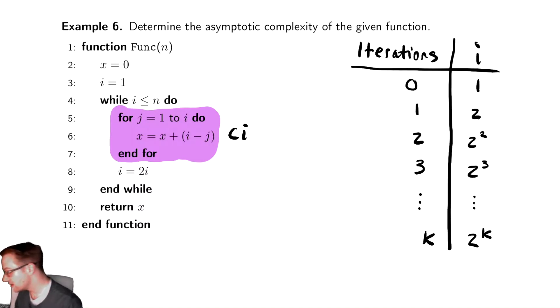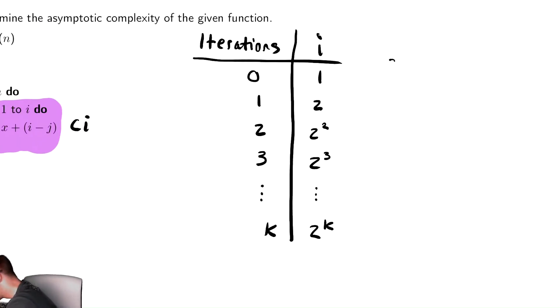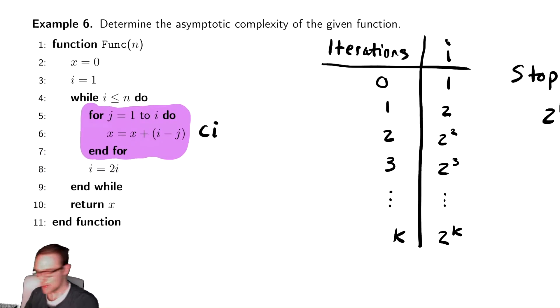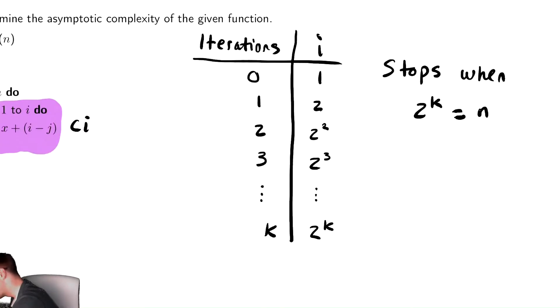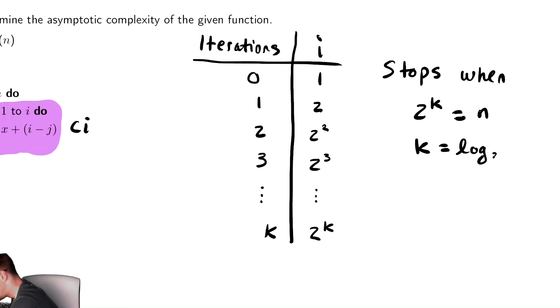And I can figure out when that stops. So this stops when that expression 2 to the k is equal to the stopping condition, or it approximately stops then. So this is equal to n. We solve that for k by taking a log base 2 of both sides. So k is equal to log base 2 of n.